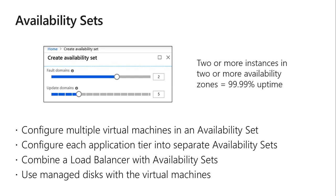If a hardware or software failure occurs, only a subset of your VMs are impacted and your overall application stays up and remains available to your customers. Availability sets are an essential capability when you want to build reliable cloud solutions. Keep these principles in mind: configure multiple virtual machines in the availability set, configure each application tier into separate availability sets, and use managed disks with those VMs.